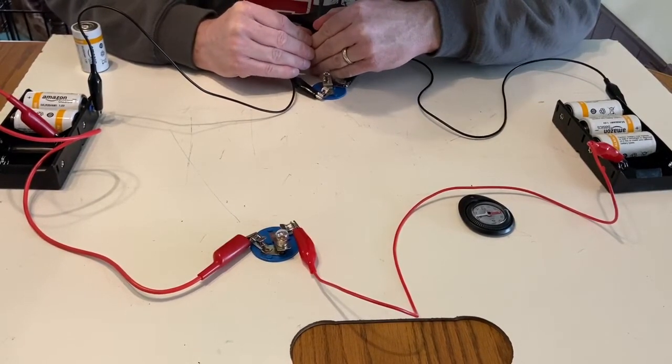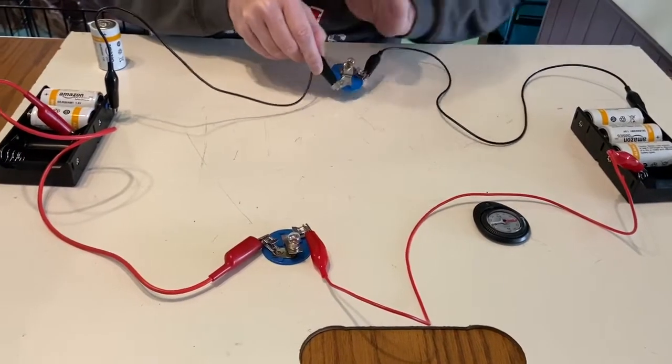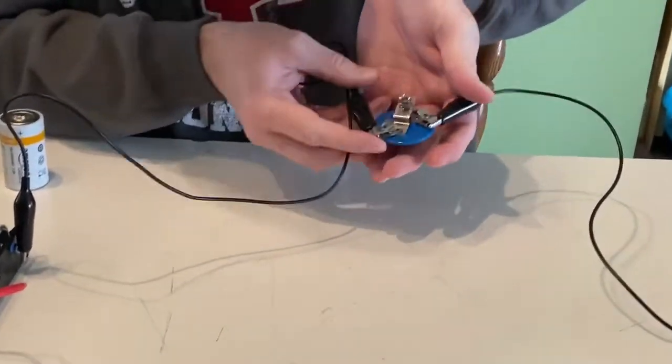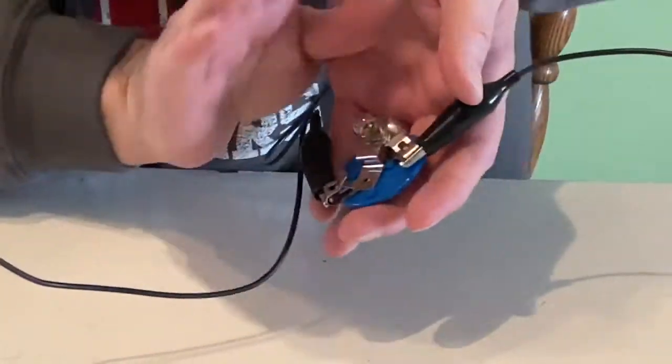This bulb is very dimly glowing. You can see it against my hand. The bulb is glowing very, very, very dimly.